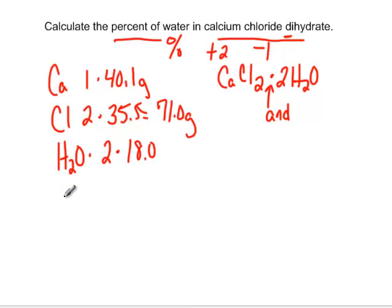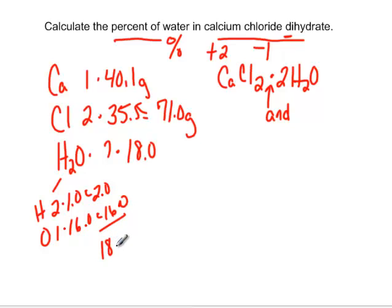Now, every water has 18 grams. Water's got two hydrogen. Each one's 1.0. So that's 2.0. And oxygen, there's one of them, and it's 16. So water's always 2 plus 16, 18.0.